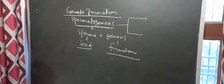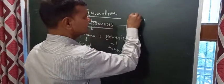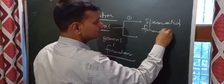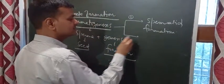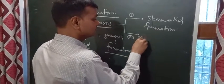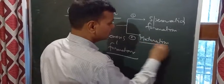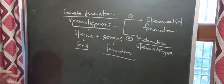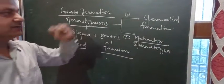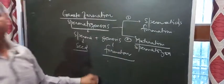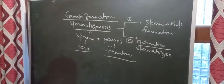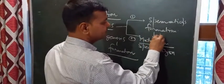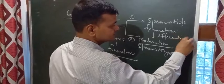In the process of spermatogenesis, there are two distinct processes. The first process is the formation of spermatids, and after the spermatids are formed, the second process is the maturation or formation of spermatozoa. The transformation of spermatids into spermatozoa is a type of differentiation.